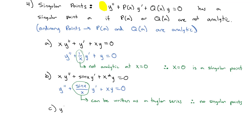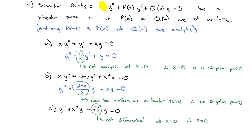What if we had y'' + x²y + √x · y = 0? We have a problem with √x because it is not differentiable at x = 0. Taking the first derivative gives (1/2)x^(-1/2), and plugging in 0 gives 0 in the denominator, which is undefined. Therefore x = 0 is a singular point. In fact, the negative values are also excluded since √x is not defined there. Basically, x must be positive to be an ordinary point.